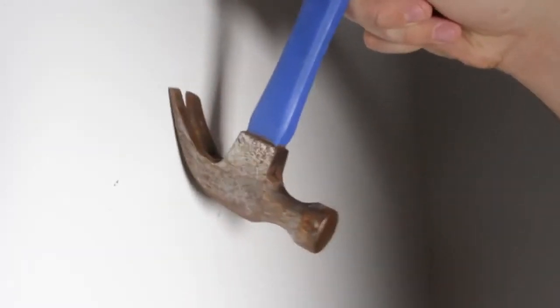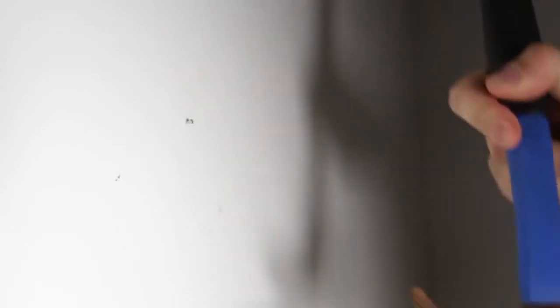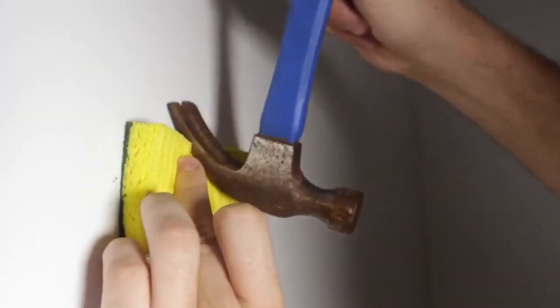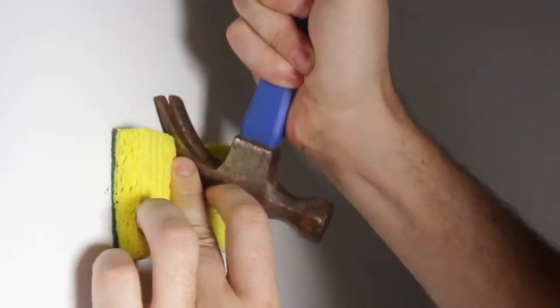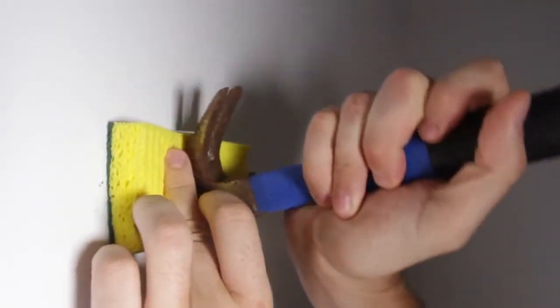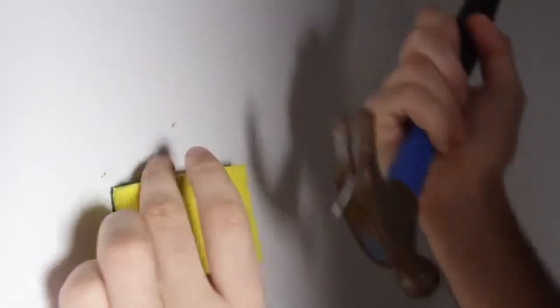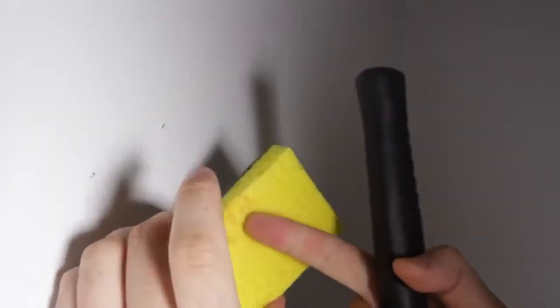So when you need to pull out a nail, just like this one right here, if you're going to pull it out like that, you're going to damage the wall. So grab a sponge, and grab the nail like that, and pull it out. Boom, easy. And you didn't mess up the wall. And look, the sponge is dirty, and the wall is fine.